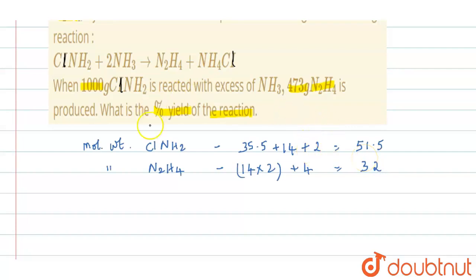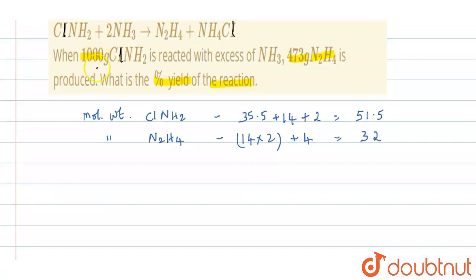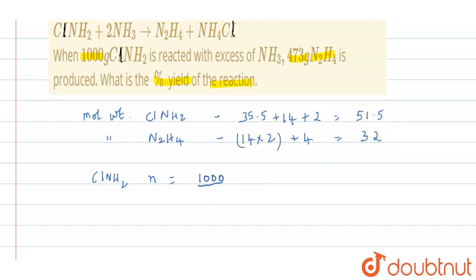In the question, 1000 grams of ClNH2 is reacted. So we must calculate the number of moles of ClNH2. The number of moles is equal to weight given, that is 1000, divided by the molecular weight, which is 51.5. When you calculate this, you get 19.417 moles of ClNH2.